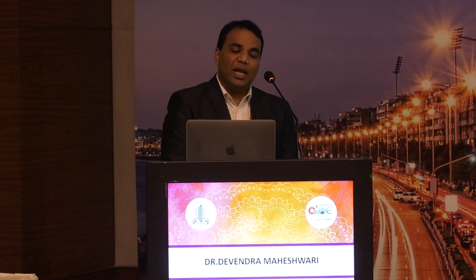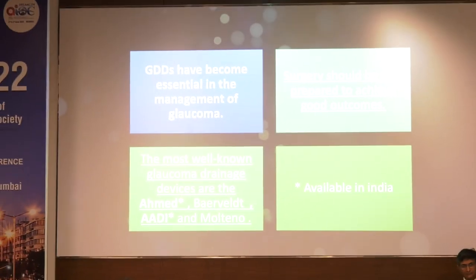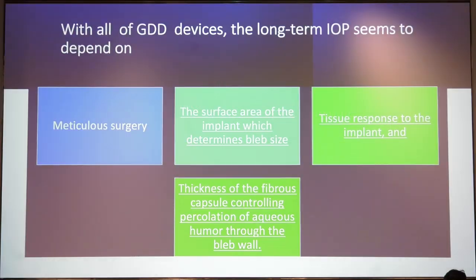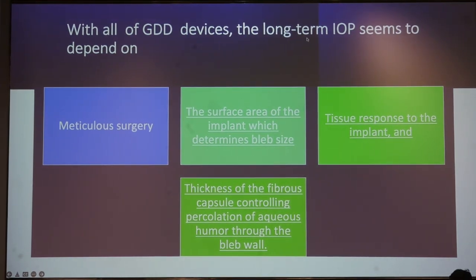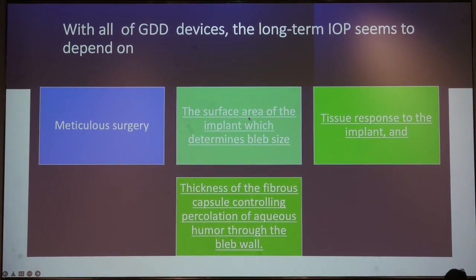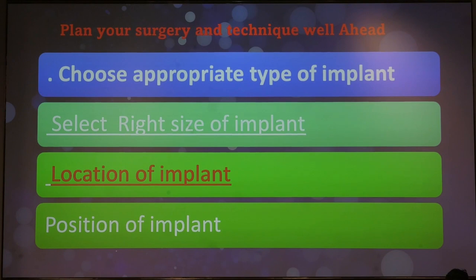When planning for GDD surgery, the surgery should be well prepared. Long-term IOP control depends not only on meticulous surgery but also on the surface area of the implant, which determines the bleb size and tissue response to the implant, and the thickness of the fibrous capsule controlling percolation of aqueous humor. Plan your surgery ahead — the technique, size and location of the implant, and whether it will be placed in the anterior chamber, vitreous cavity, or sulcus.